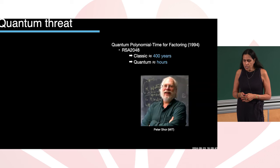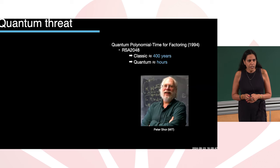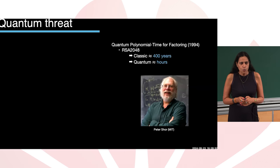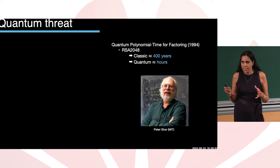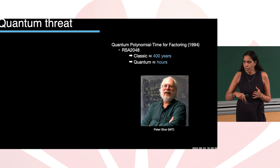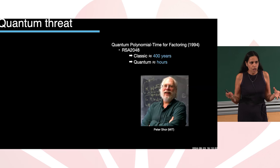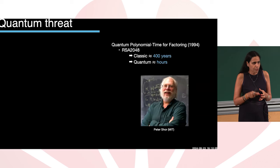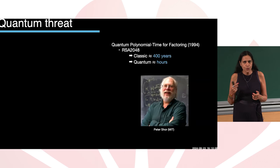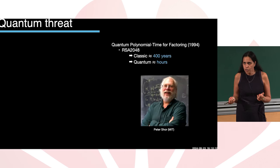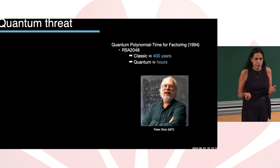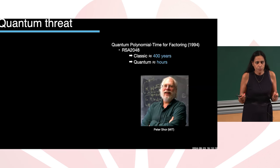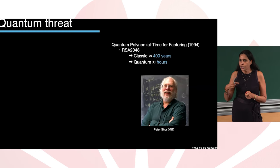I start with motivation of quantum threat. If you're familiar with RSA encryption, which is based on prime factorization, you know multiplying two large primes is relatively fast. But if you have a large prime, it takes a long time to break it to its factors, and this has been used for cryptography.